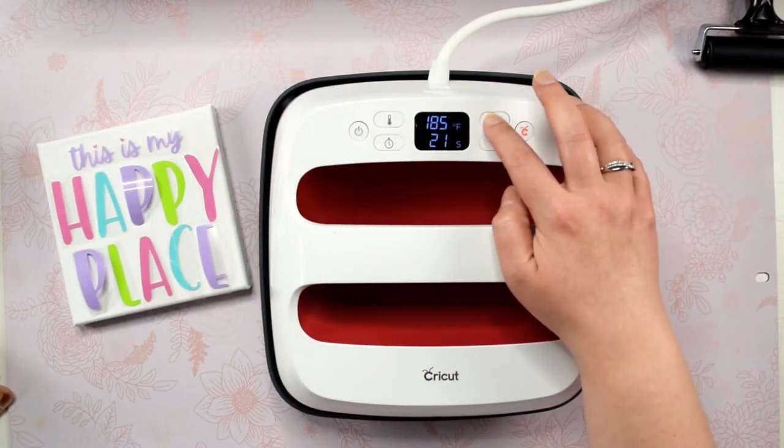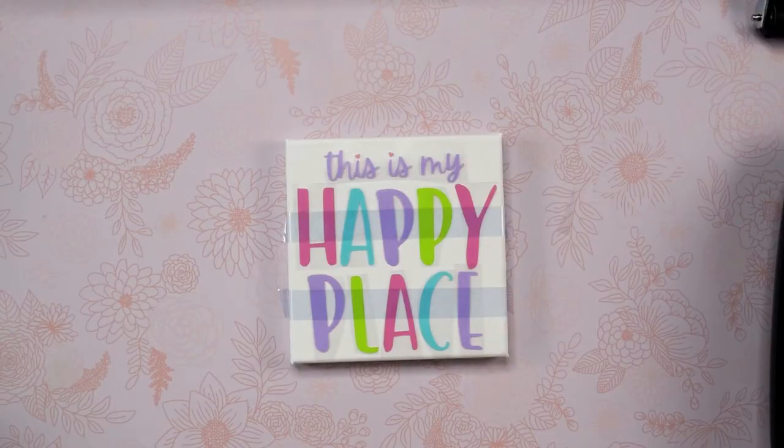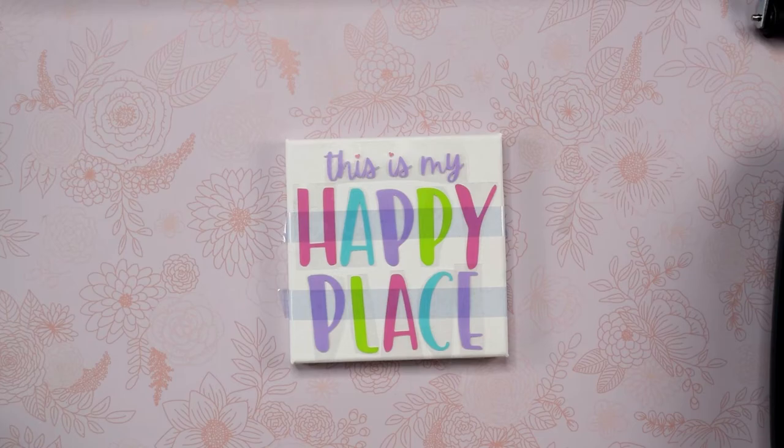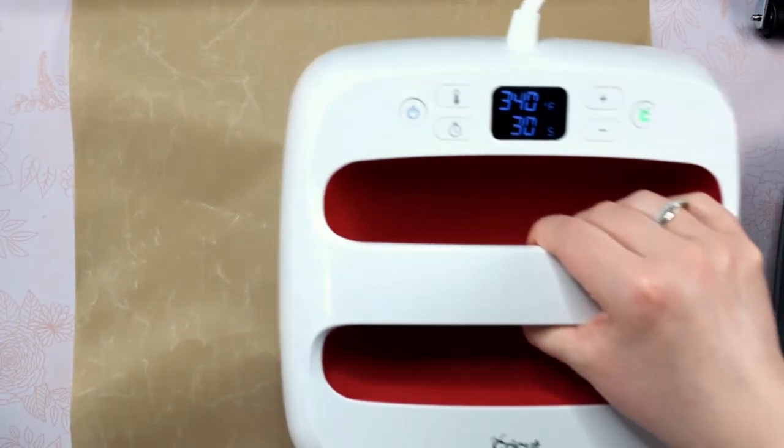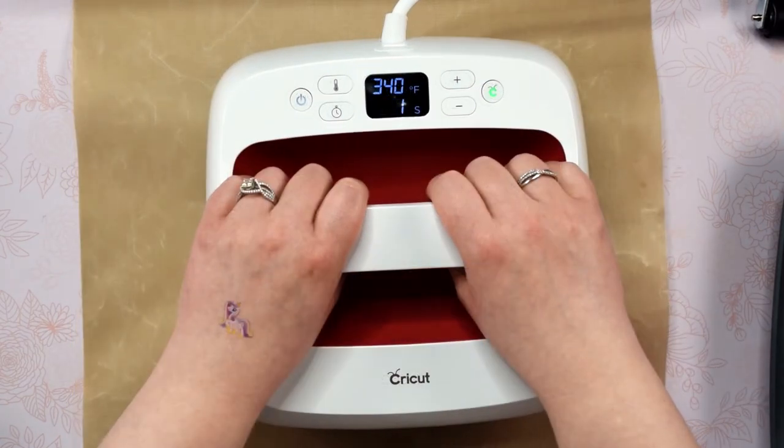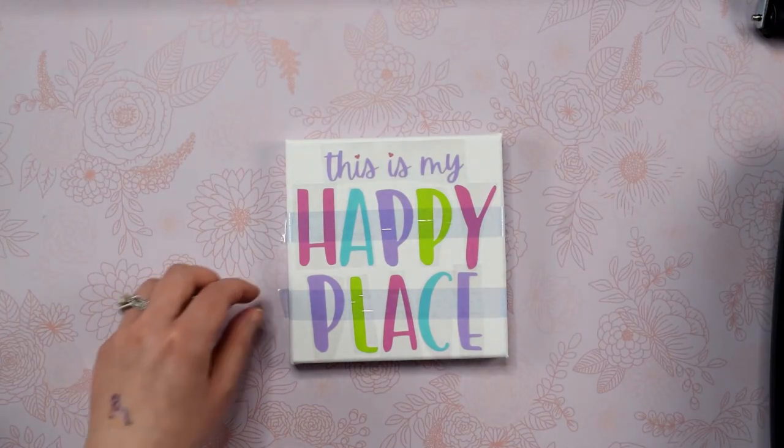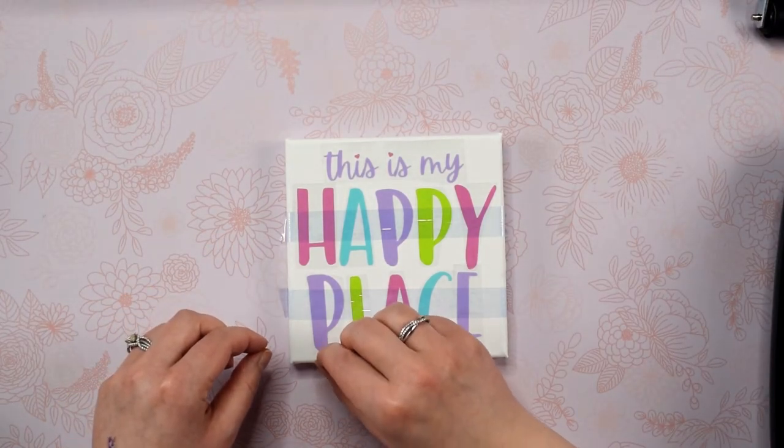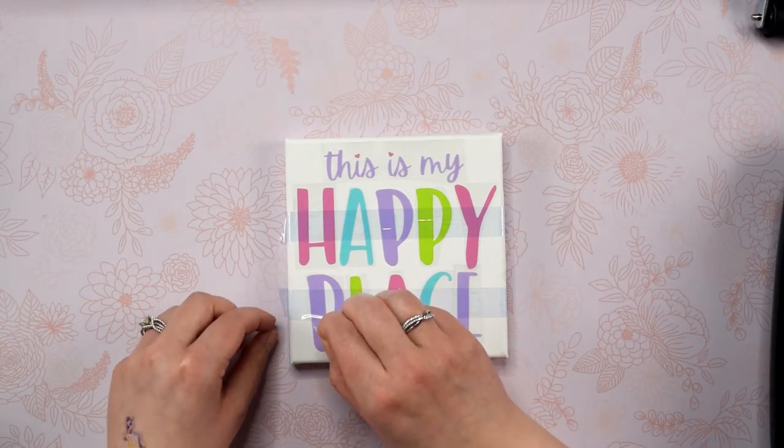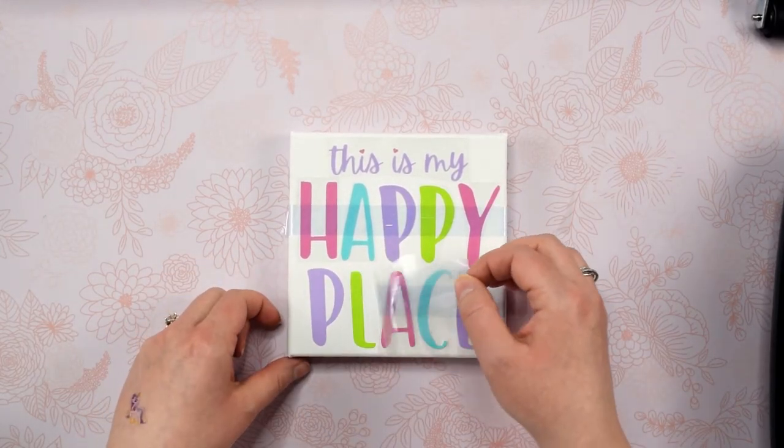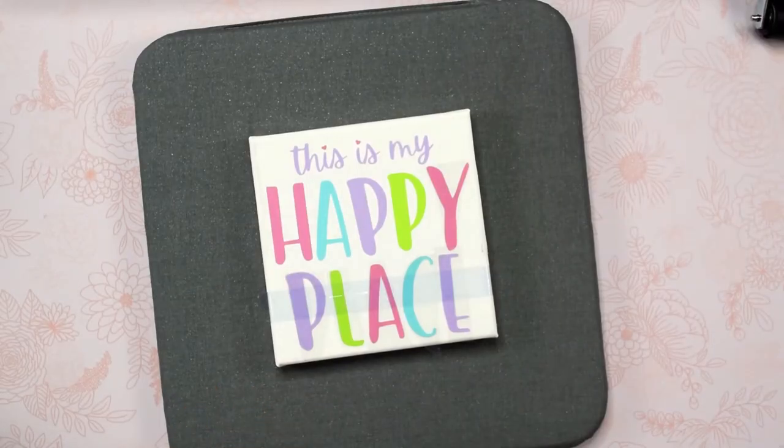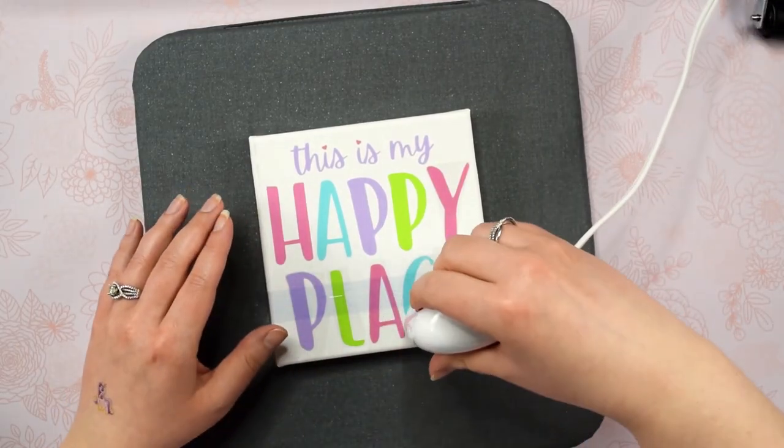Now I learned a few things during this process. The first is that if you are using an EasyPress, you should absolutely use a protective sheet over the canvas when you are pressing. I will link that down below so you know what kind of protective sheet to use. When I didn't do this, I ended up with black marks on the edges of my canvas. The second thing I learned is that it's really difficult for the larger heat press to evenly apply pressure to canvas. This is because the frame that is used around the edges is not a flat surface and the center of the canvas doesn't have anything underneath it. So there really isn't a great way to get even heat through the entire design on the canvas with the larger heat press.